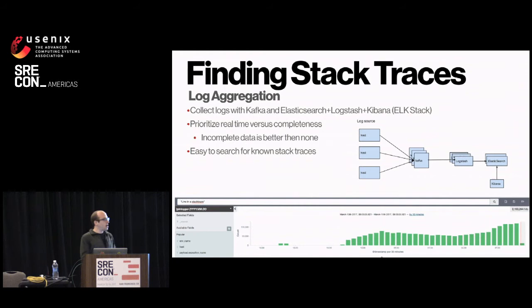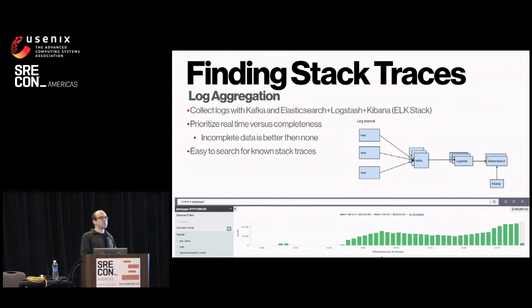In our system we prioritize real-timeness over completeness. During a big incident when a thousand times more logs are being generated, we'll drop some logs to have real-time results instead of delayed but complete results. When debugging, having sampled results — maybe one out of every 100 logs collected — is way better than having no data at all. This makes it really easy to search for a known stack trace in Kibana.